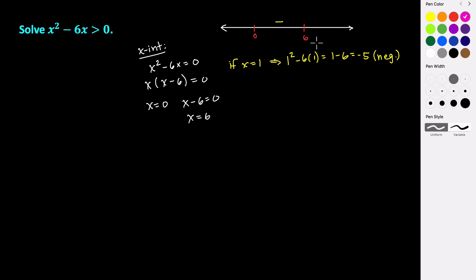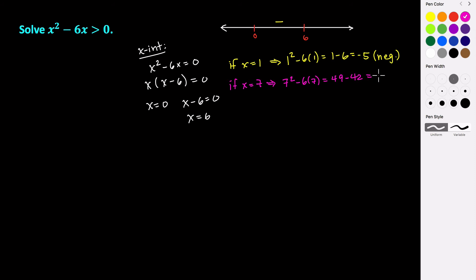Let's try a number to the right of 6 — maybe 7. If x equals 7, we plug in 7: 7 squared minus 6 times 7, which is 49 minus 42, which equals 7. That's a positive number, so values to the right of 6 are going to be positive on that interval.